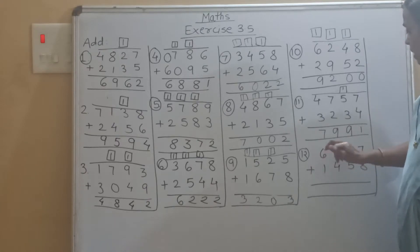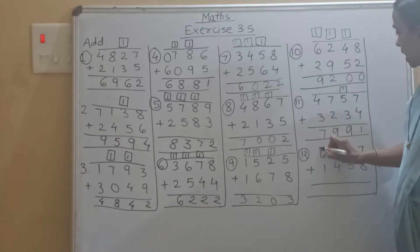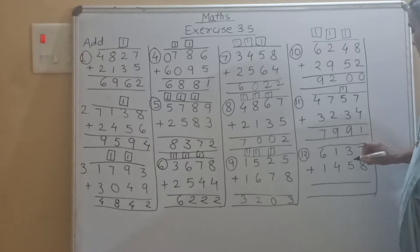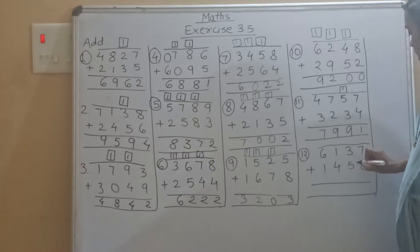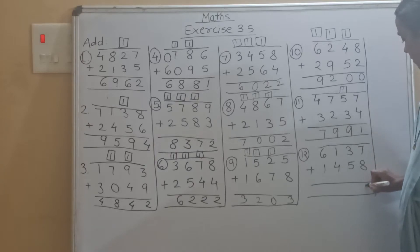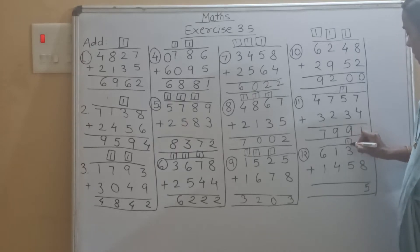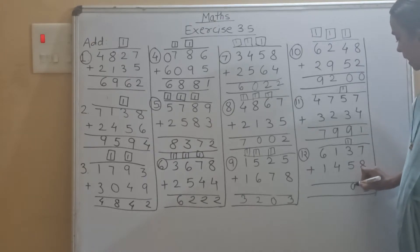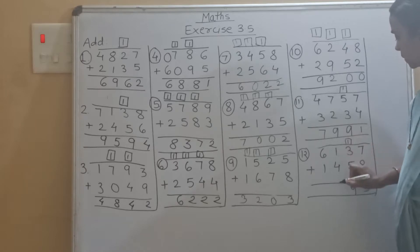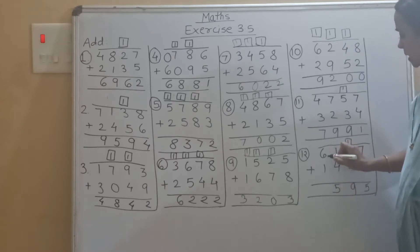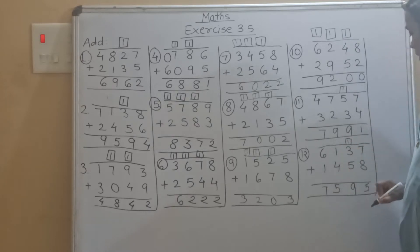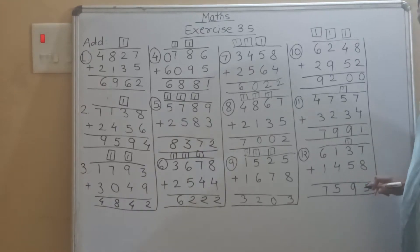Now the twelfth example is 6137 plus 1458. So 8 plus 7 is 15, carry 1. Then 3 plus 1 is 4, 4 plus 5 is 9, 4 plus 1 is 5, 6 plus 1 is 7. So the answer is 7595.